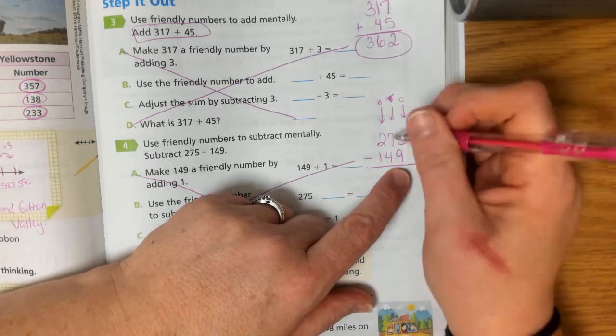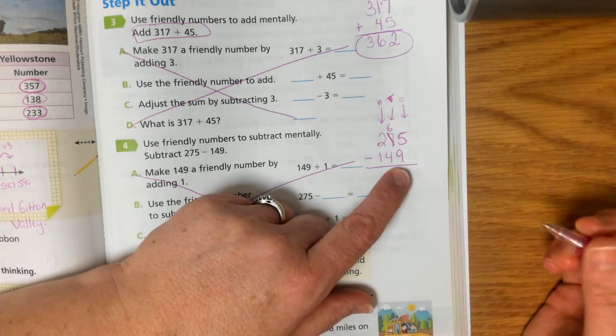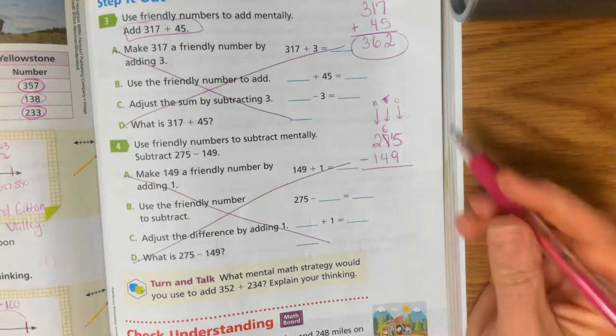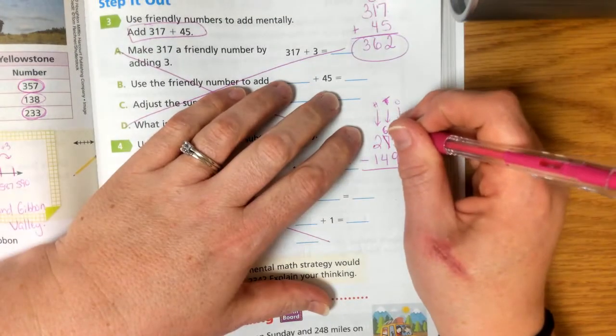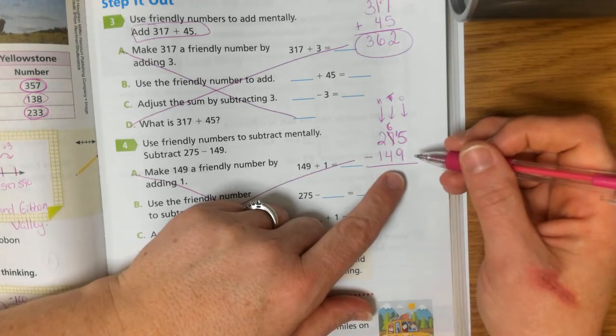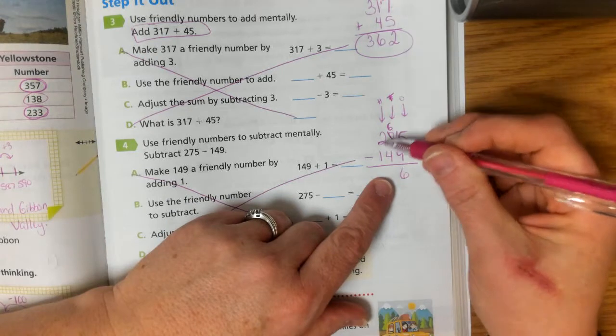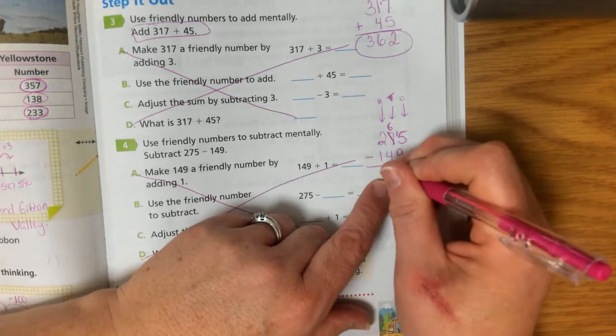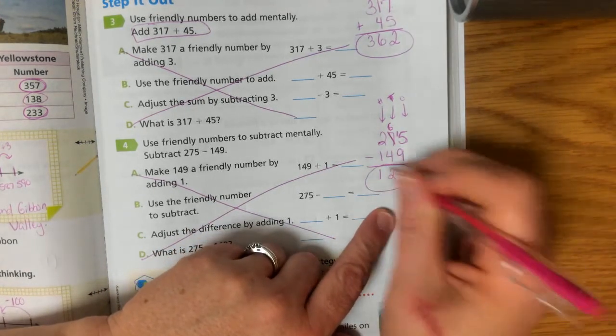So I'm going to have to go next door to my 7 and regroup one of those 7s and it's going to become a 6. So then that's going to make this a 15. Because I'm taking one group of 10 and I'm making it, adding it to my ones. So 15 minus 9 equals 6. 6 minus 4 we can do, right? Because this number is bigger than this number. 6 minus 4 is 2, and 2 minus 1 is 1. So our answer is 126.